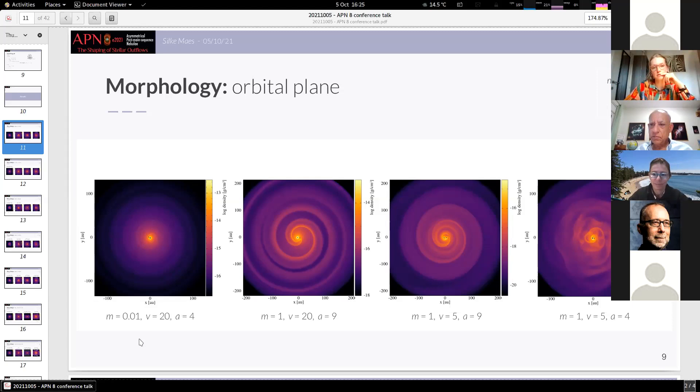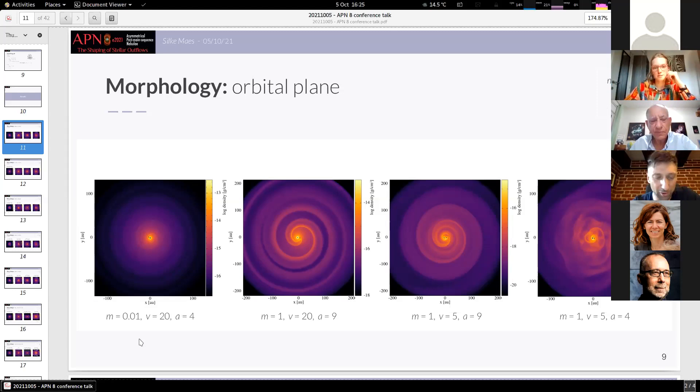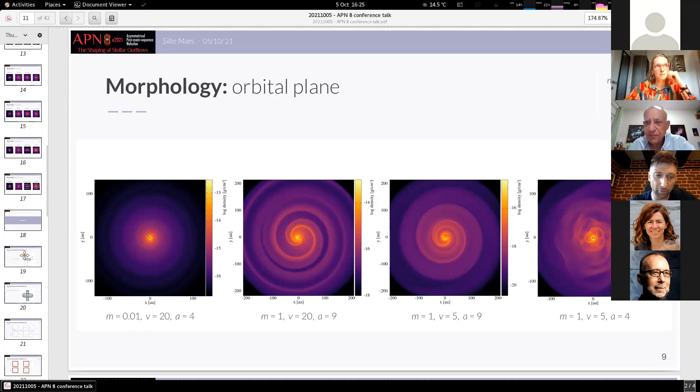And what is the time scale of the simulation? So these simulations are all between five and ten orbits, depending on the binary separation.